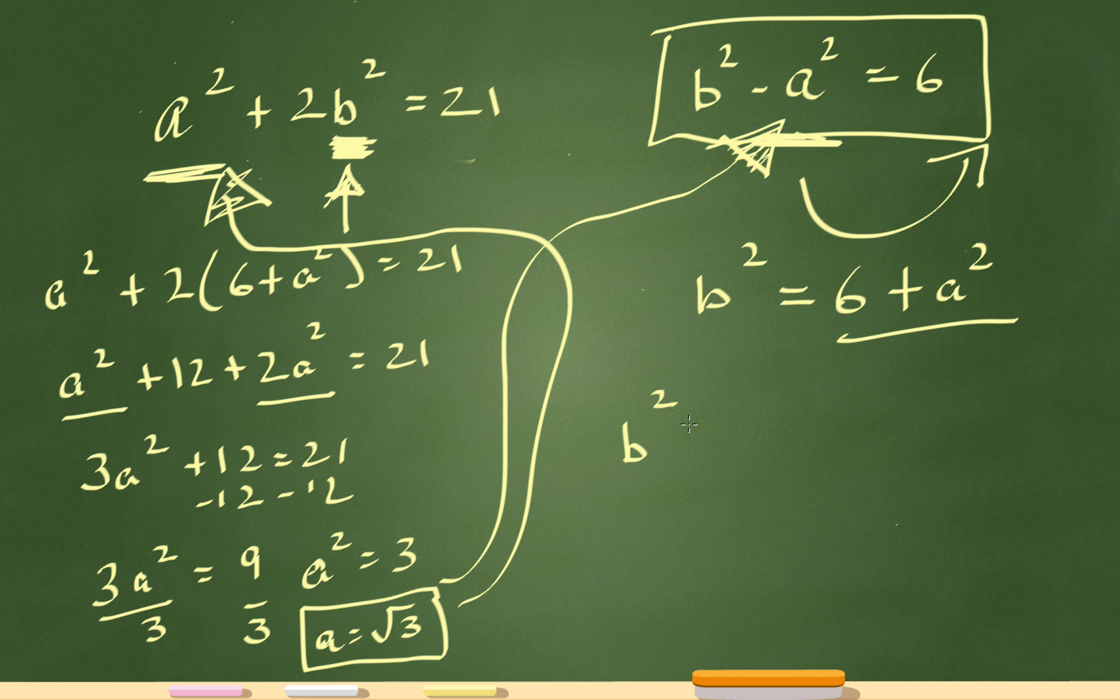So b squared minus square root of 3 squared equals 6. The square root of 3 squared is just 3. So that's b squared minus 3 equals 6. Then add 3 on both sides. So b squared will equal 9, and then b will equal 3.